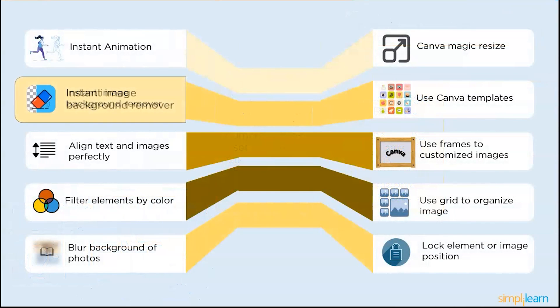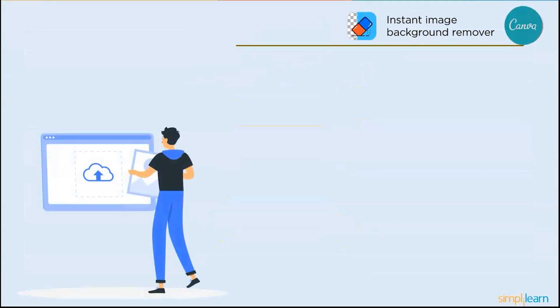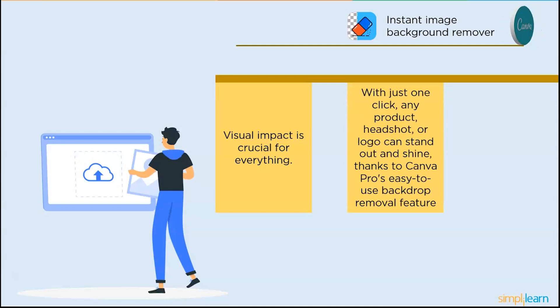And the next one is instant image background remover. Visual impact is crucial for everything from social media to e-commerce, but even in the case of flawless photographs, backdrops can be annoying. With just one click, any product, headshot, or logo can stand out and shine thanks to Canva Pro's easy to use backdrop removal features. Simply choose an image, then under the effect section, click on the background remover. The background will magically vanish to showcase particular goods or add layers to the design.